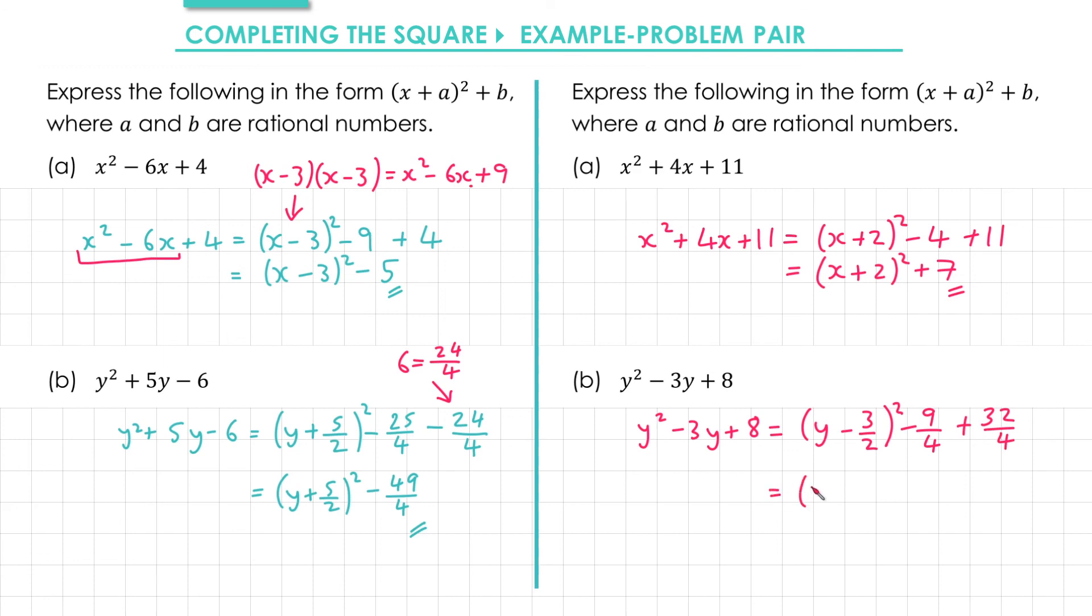Simplifying gives us y minus 3 over 2 squared plus 23 over 4.